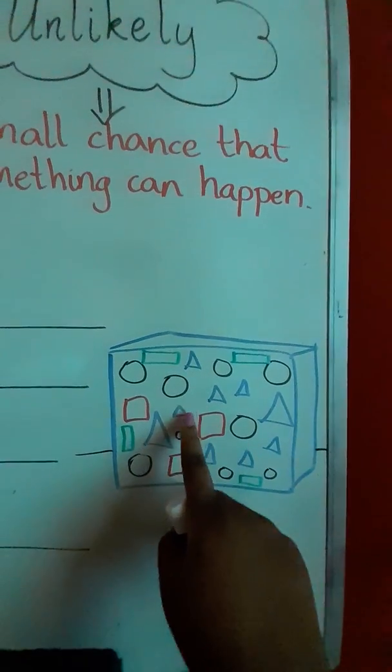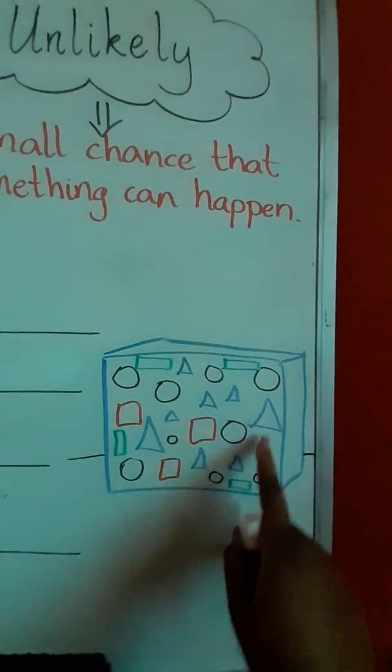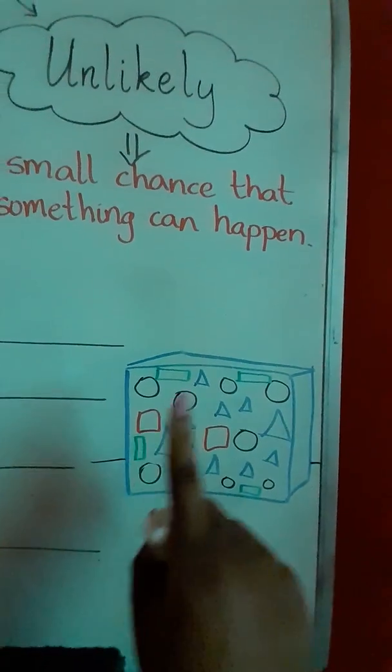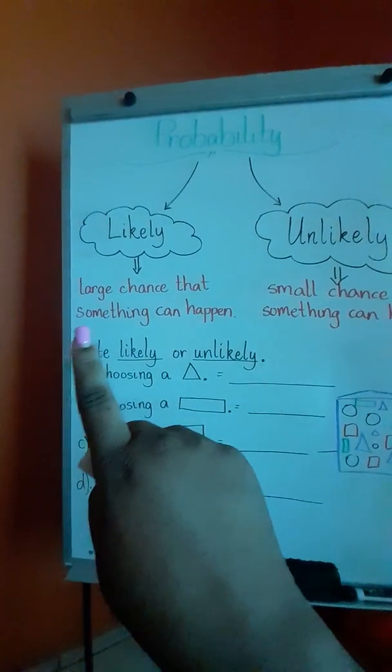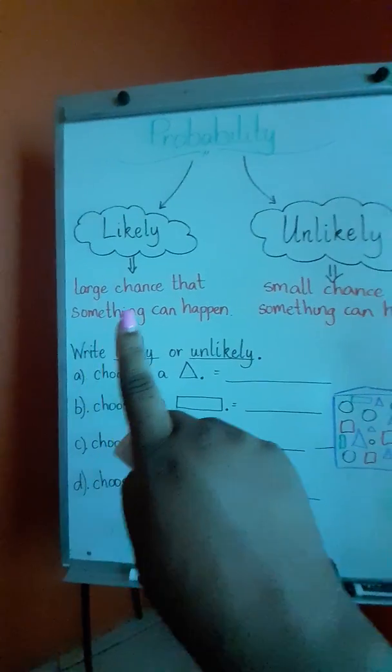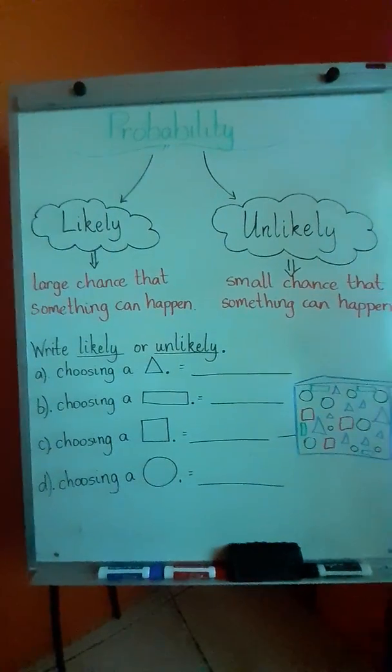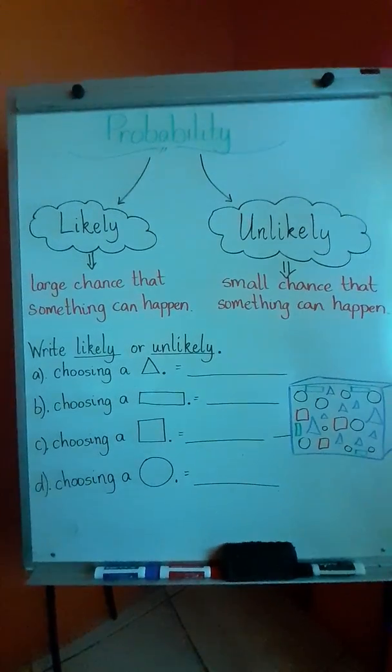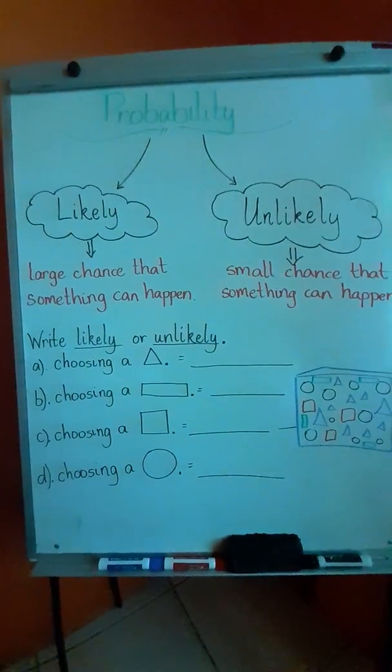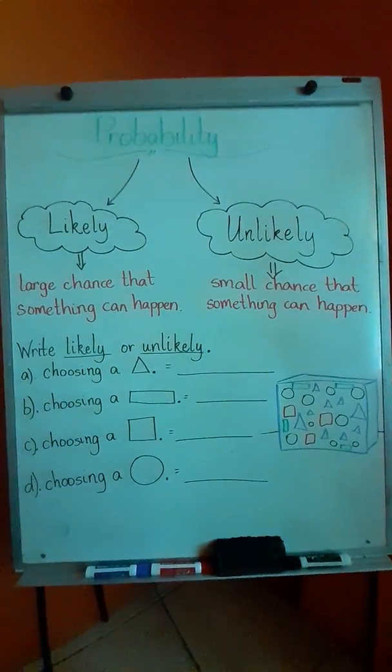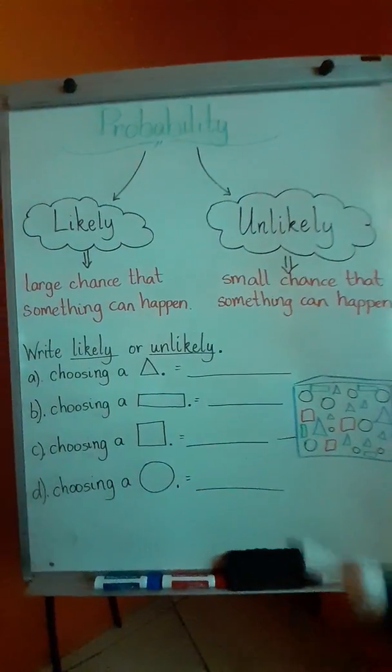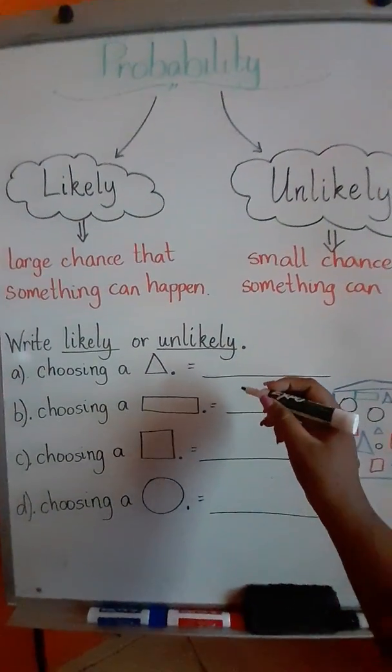We have 1, 2, 3, 4, 5, 6, 7, 8. We have a whole lot of triangles. So does that mean that we have a large chance of pulling a triangle or a small chance? The correct answer is we have a large chance. So because we have more triangles inside the box, the answer is it is likely to select a triangle.